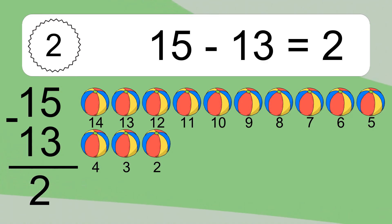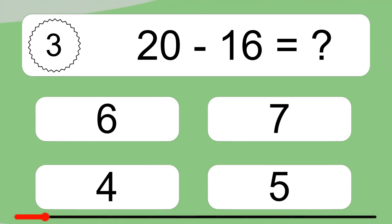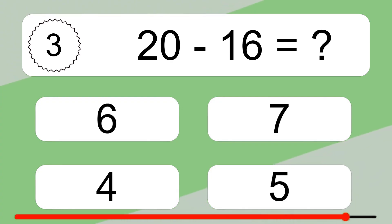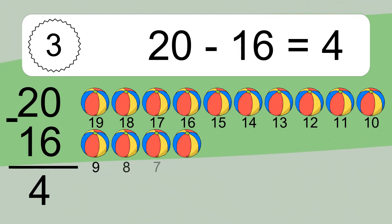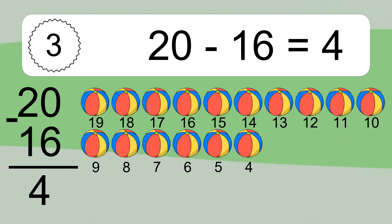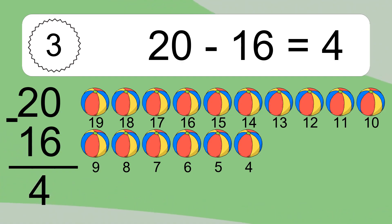2. 20 minus 16 equals what? 20 minus 16 equals 4. Let's count it: 19, 18, 17, 16, 15, 14, 13, 12, 11, 10, 9, 8, 7, 6, 5, 4.